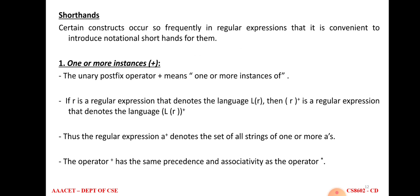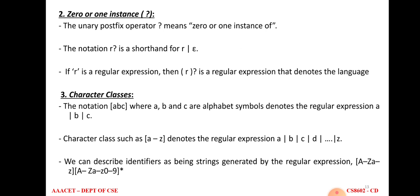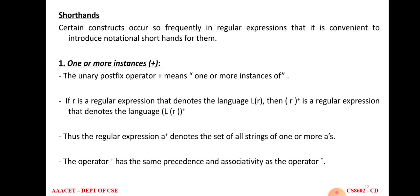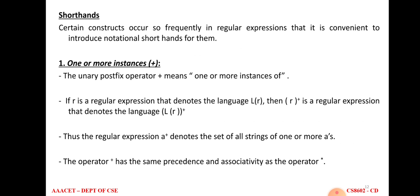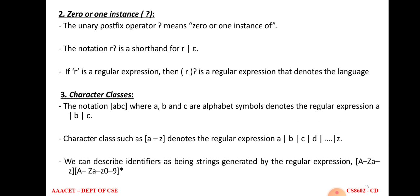One or more instances are represented by positive closure (L+), and zero or more instances are represented by Kleene closure (L*). Using the postfix operator '+' for positive closure and '*' for Kleene closure: '+' means one or more times and '*' means zero or more times. Character classes give the definition values for letters and digits — letters means [A-Z | a-z] and digits means [0-9].